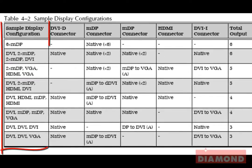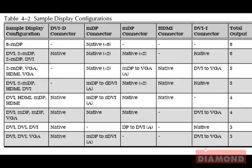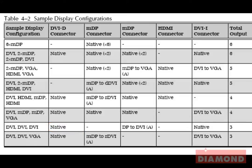Starting from the left, the first column shows a possible monitor configuration you can use. If a box on the chart has a dash in it, this means you cannot use the port on the video card to set up the configuration with. When a listing under the connector says native, you will use the standard cable that connects from your monitor to the graphics card without using a video converter adapter.